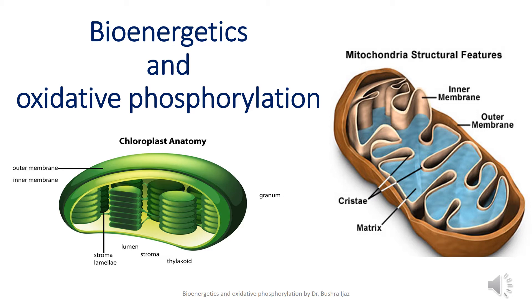Assalamu alaikum class. Let's continue our discussion on bioenergetics and oxidative phosphorylation. In this lecture we will be studying about ATP, how and why ATP is called the energy currency of the cell, what are the biological oxidation-reduction reactions, and how the flow of electrons does biological work and what is a biological circuit.